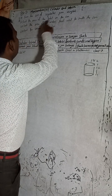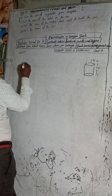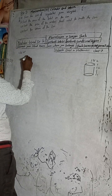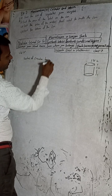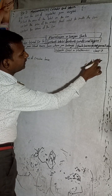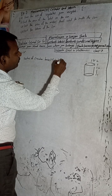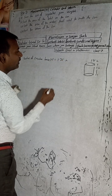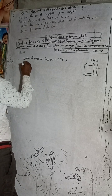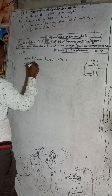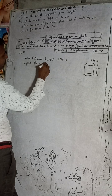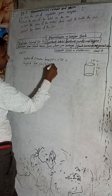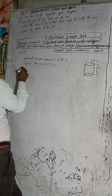Now let's proceed. Given from the figure: radius of the circular base is 1.75 inches, and the height of the can is 5 inches. We have to find: the area of the label, the area of the metal sheet used to make the can, and the volume of the can.